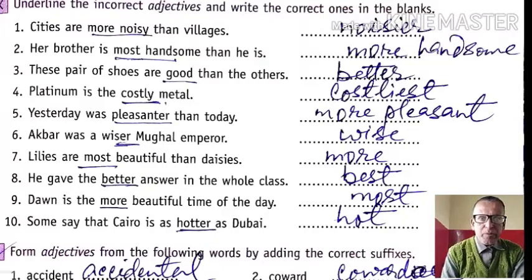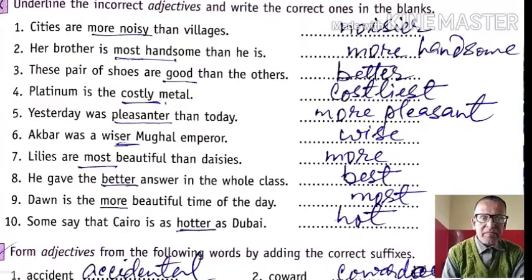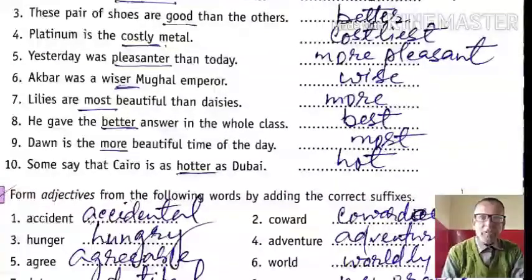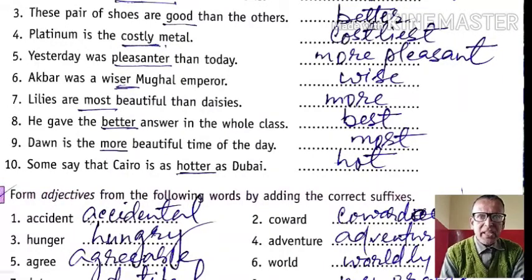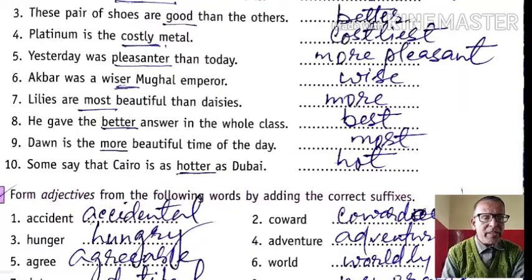Question 7: Lilies are most beautiful — it should be 'more beautiful'. Question 8: He gave the better answer in the whole class. 'The' is used, so superlative degree — he gave the best answer. Question 9: Dawn is the most difficult time — 'the' is used, so superlative: the most difficult time of the day. Question 10: Some say that Cairo is as hot as Dubai. 'As...as' is used, so positive degree — Cairo is as hot as Dubai.